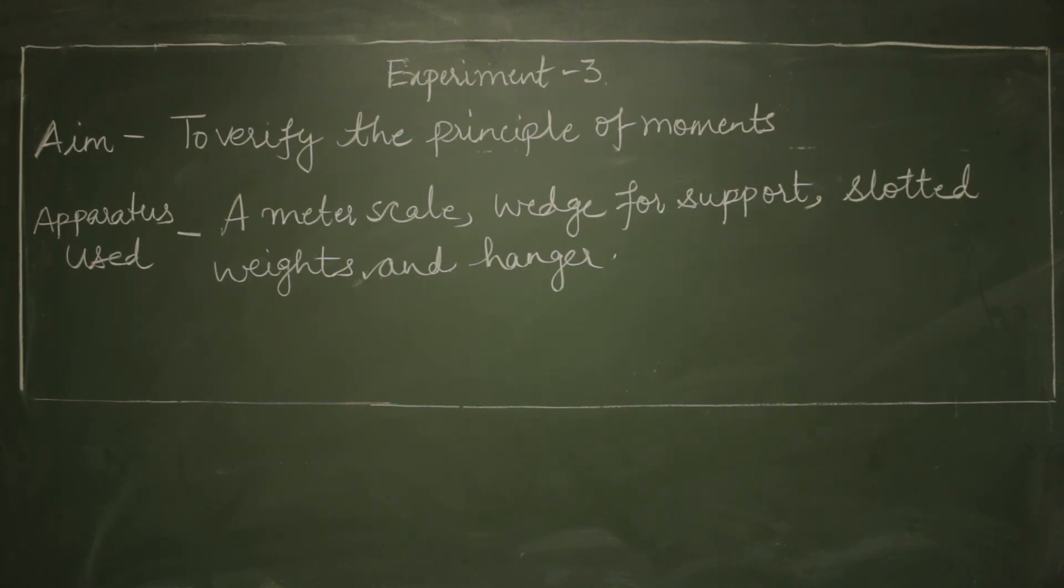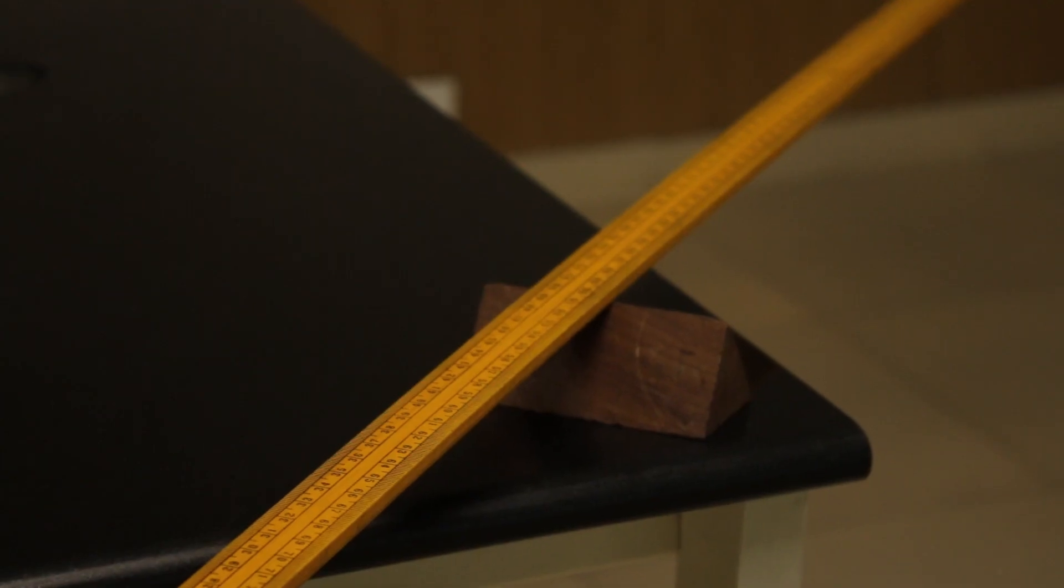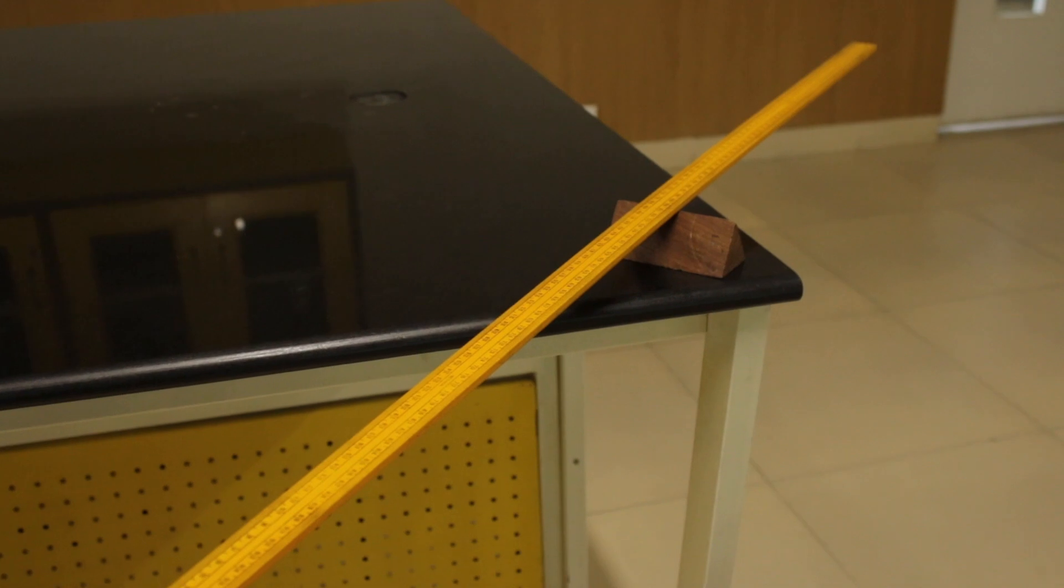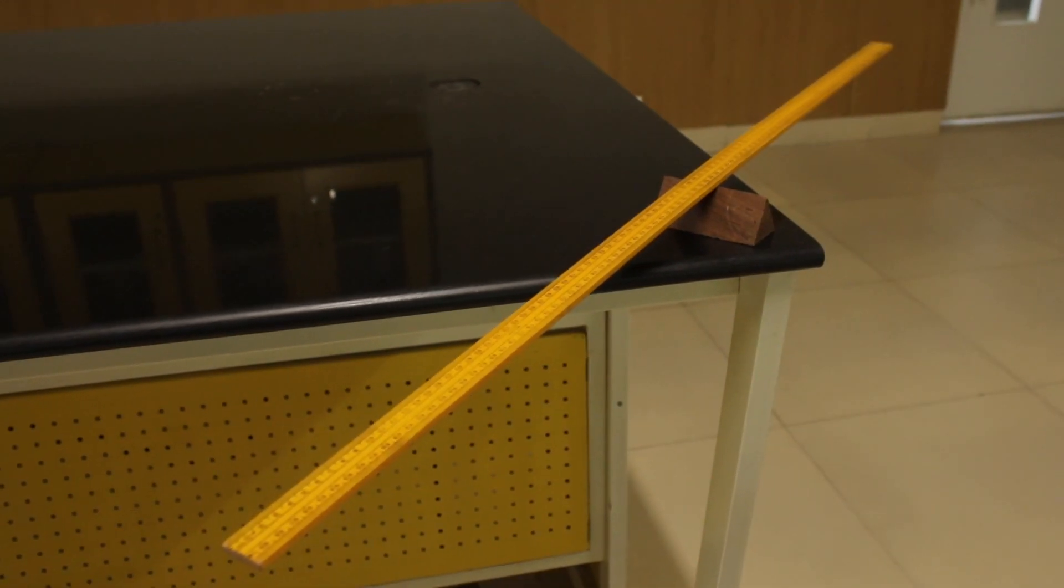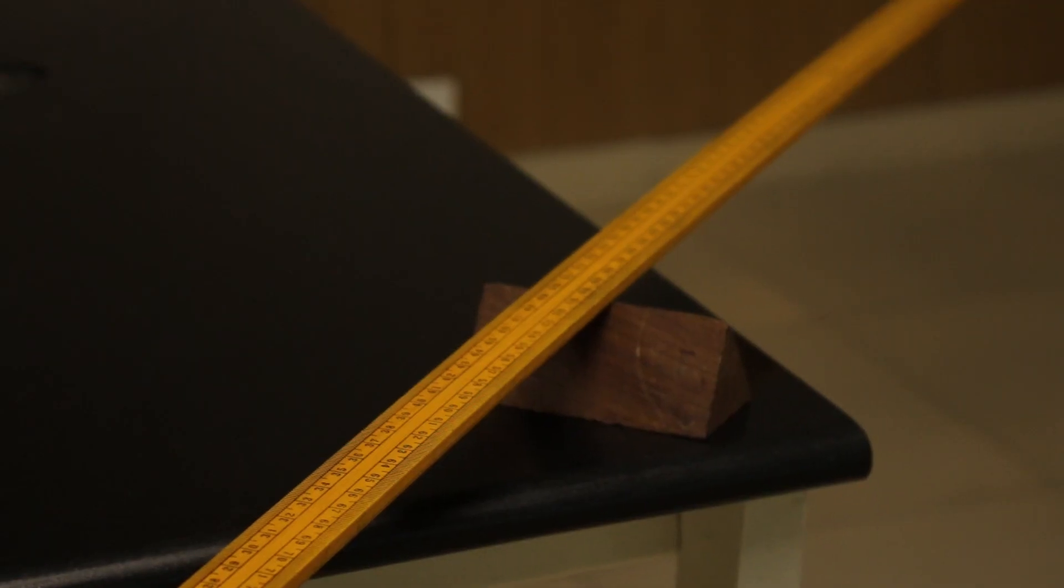Let's see how it is done. I have kept the scale over the wedge and it is now balanced, which means the scale is in equilibrium position and is supported at its center of gravity.